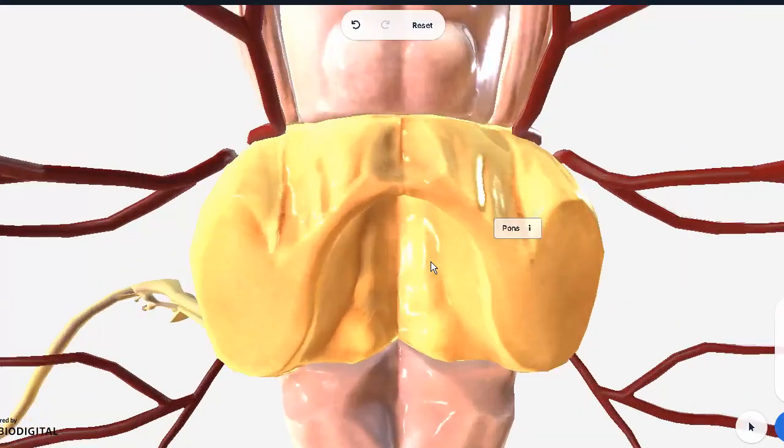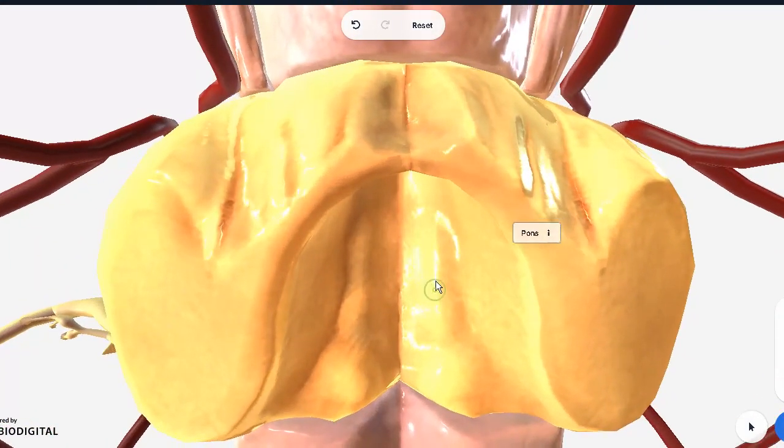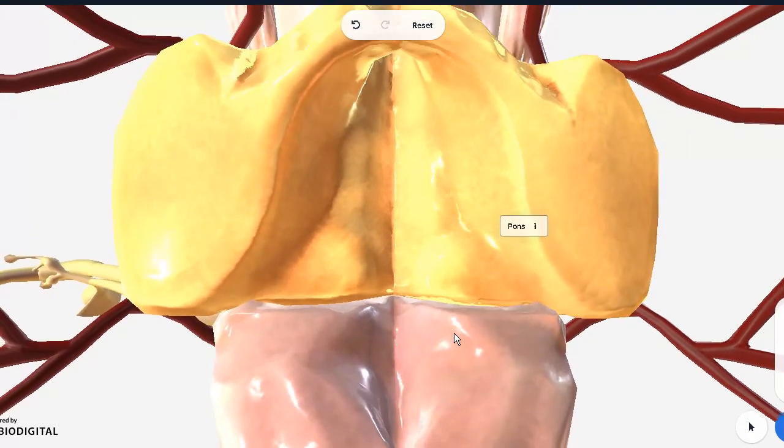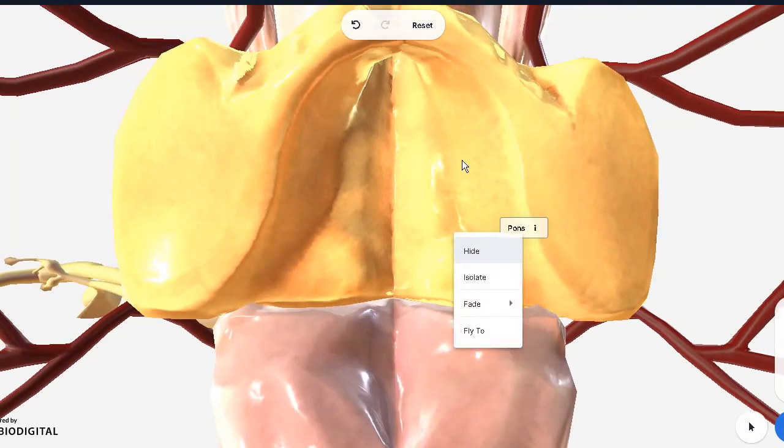On the back, however, there are numerous things to show. First and foremost, the pons forms the upper half of the fourth ventricle. The medulla was forming the lower half. And I told you on the lower side, you had the hypoglossal triangle and the vagal triangle. And these stria medullaris fibers, which are not visible here. But at this region...